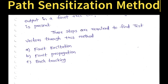There are 3 steps required to find test vectors through this method. The first step is fault excitation, the next one is fault propagation, and the third step is backtracking. This concept is better understood through a worked example, so let us take a random example and perform these 3 steps to find the test vectors using the path sensitization method.